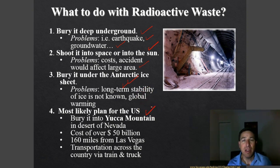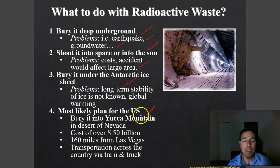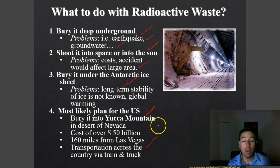In the United States, the most likely plan is to store high-level nuclear waste underground. The US government has built a large facility called Yucca Mountain in Nevada — a huge underground facility under the mountain where waste would be transported by truck and train from nuclear reactors throughout the country. Hopefully that answered some of your questions about nuclear energy.